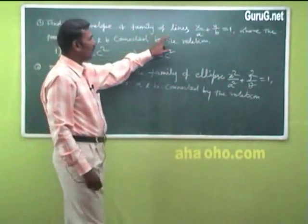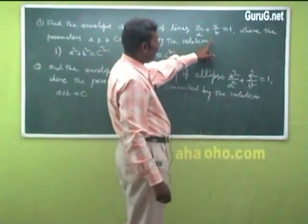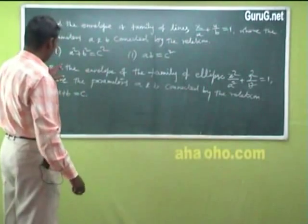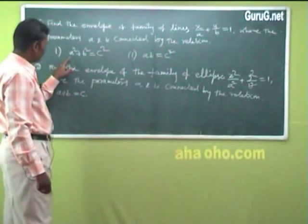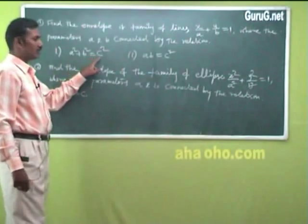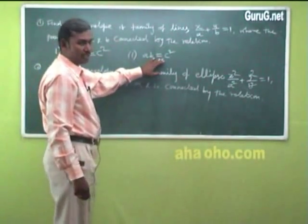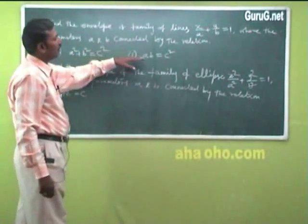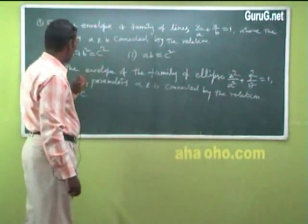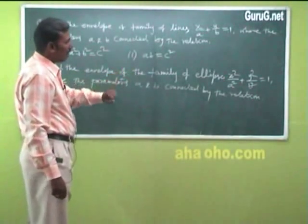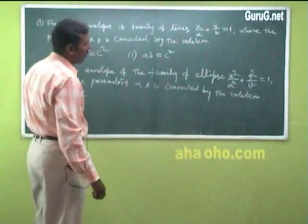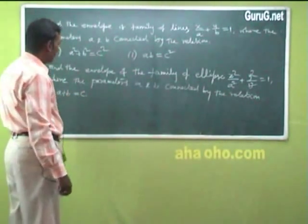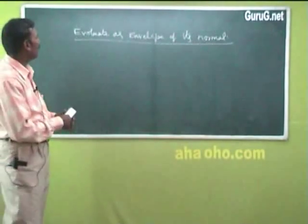Next: find the envelope of the family of lines x/a + y/b = 1, where parameters a and b are connected by two relations: (i) a² + b² = c², and (ii) ab = c². Break the problem into two parts. Also: find the envelope of the family of ellipses x²/a² + y²/b² = 1, where a + b = c.